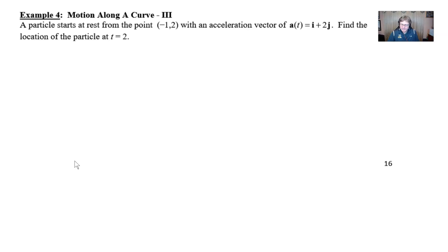If we read the problem, it says a particle starts at rest from the point (-1, 2) with an acceleration vector of a(t) = i + 2j. Find the location of the particle at time t = 2.